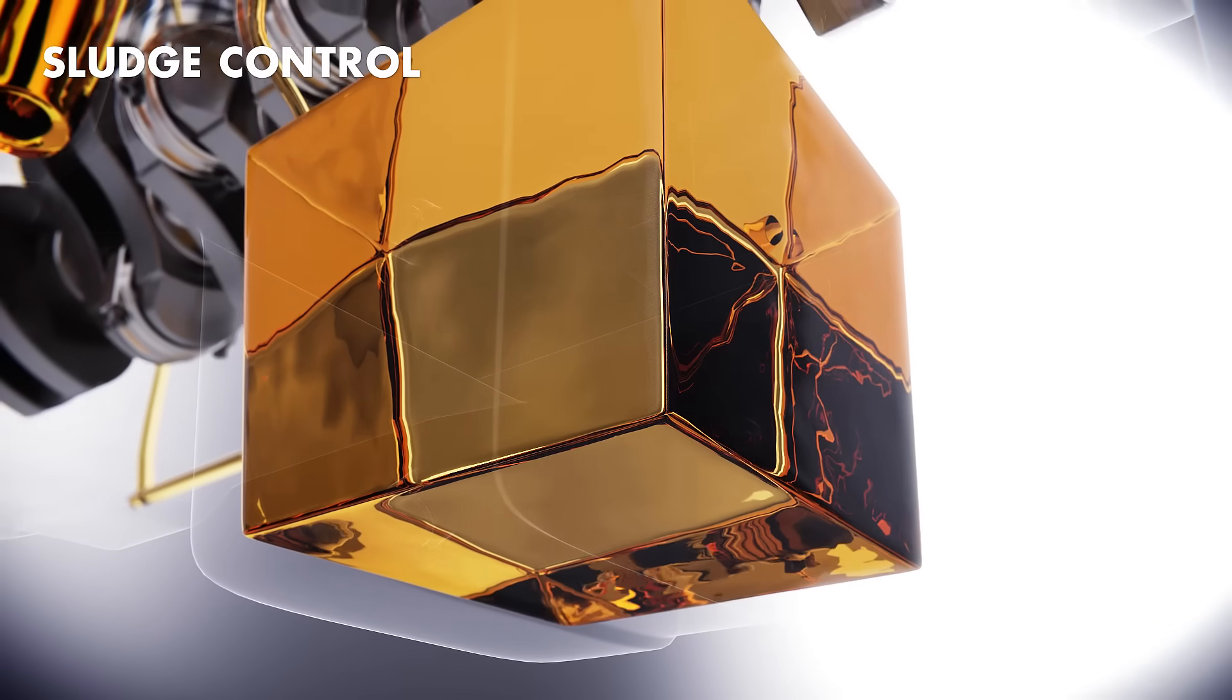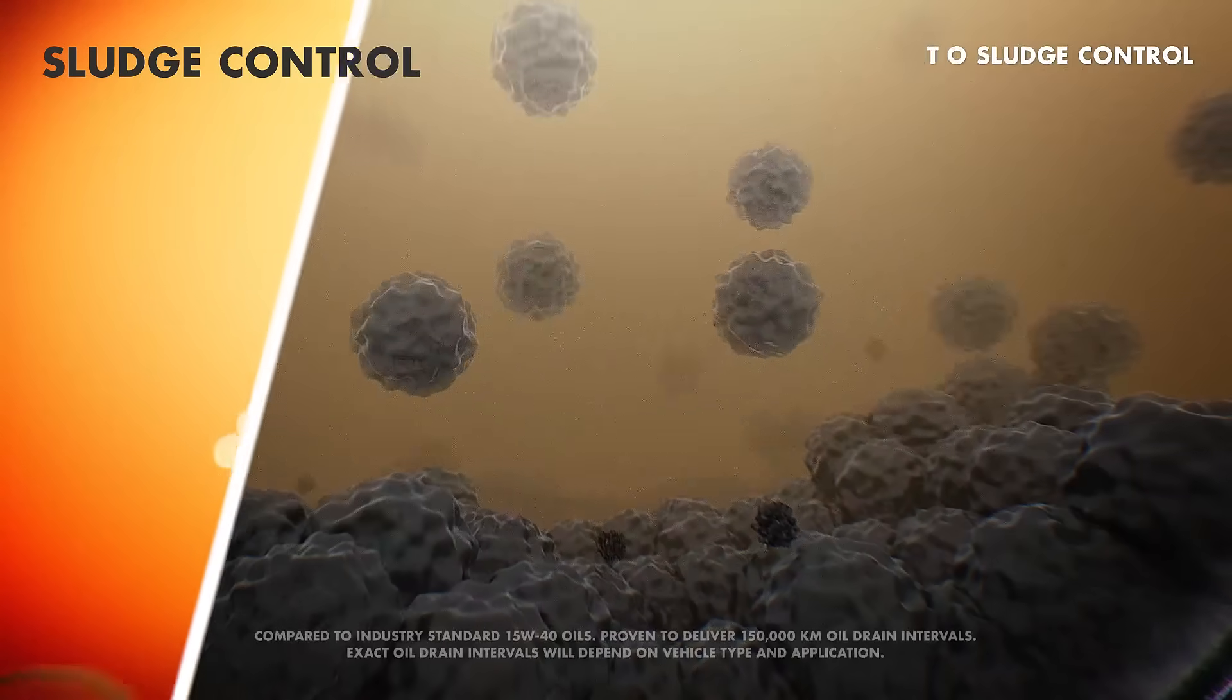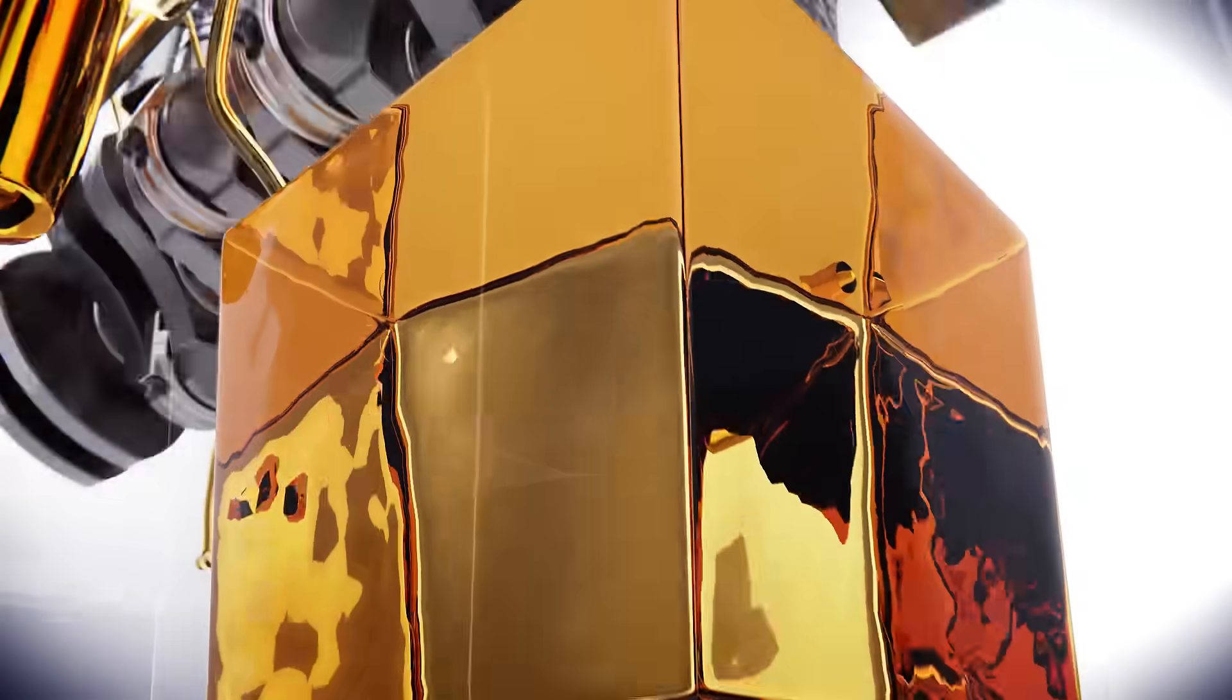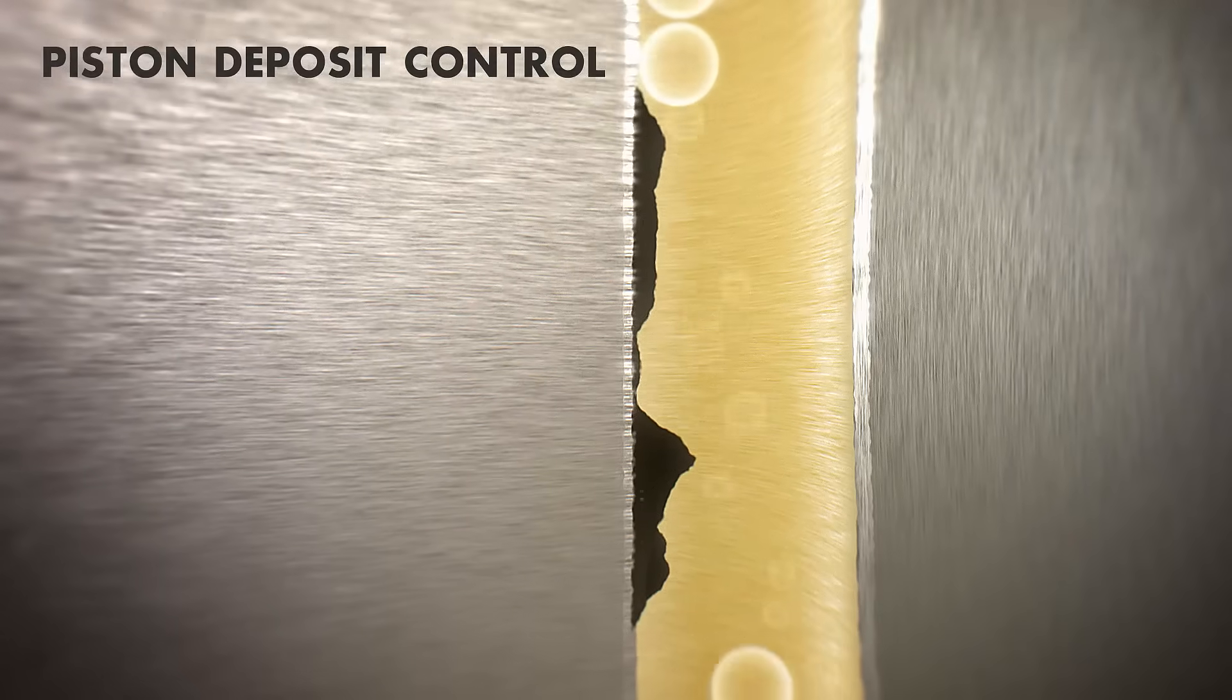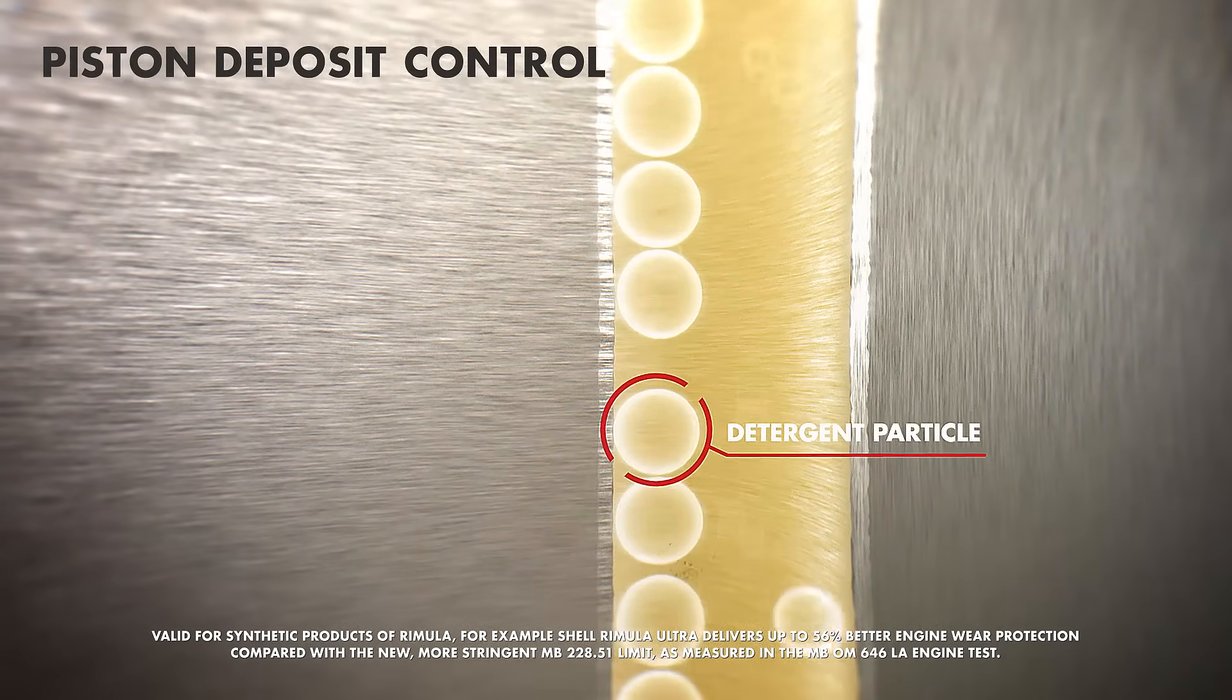Additives target carbon particles to prevent sludge formation, which helps extend oil drain intervals. Detergent molecules help prevent build-up of deposits around the piston crown, resulting in a cleaner, more efficient engine and reducing maintenance costs.